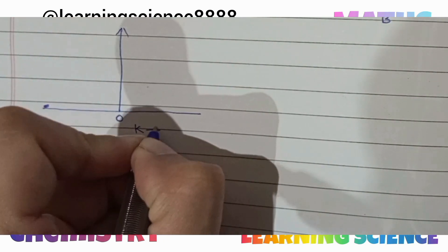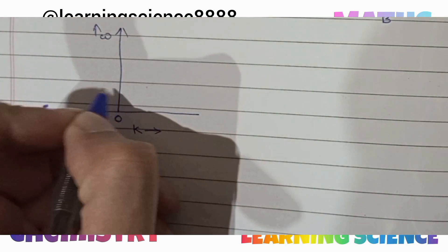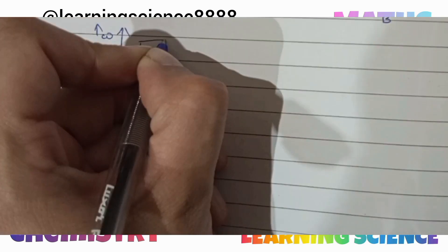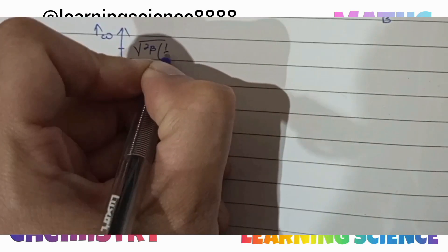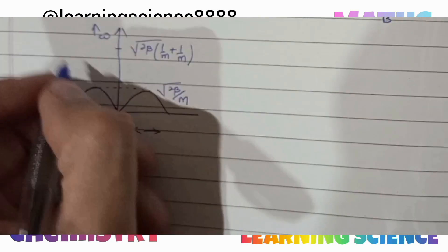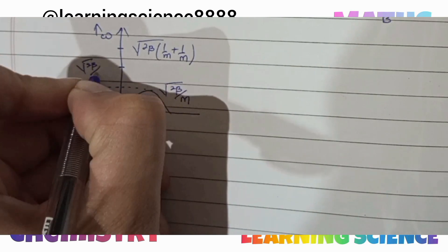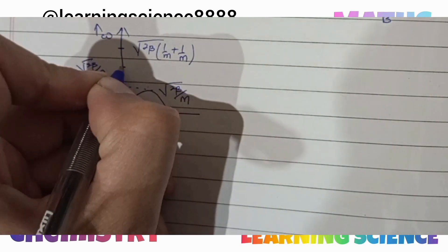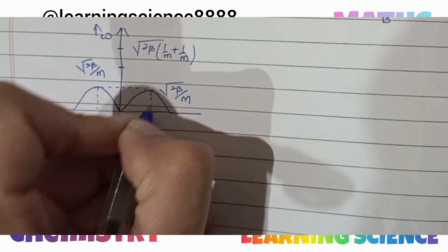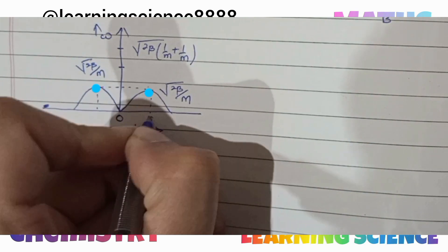This is our graph. The origin is here, the x-axis is along our k, and the y-axis is along our ω (omega). The maximum value is under root of 2β times (1/m + 1/M). Then the minimum value of the optical branch is under root of 2β divided by small m. This topic was previously covered — see the first videos for reference. The maximum occurs at ±π/2a.